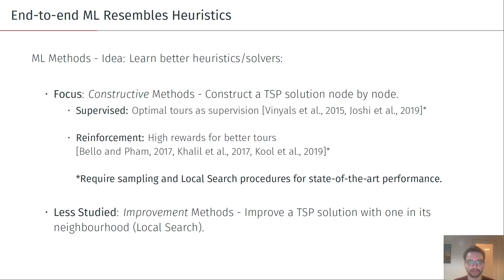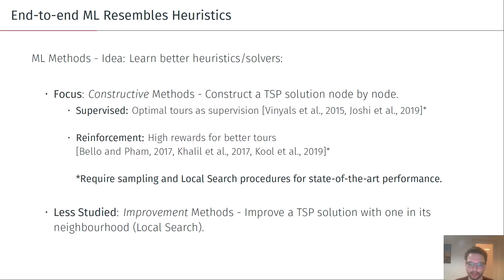However, both of these methods require sampling and a local search procedure to achieve state-of-the-art performance. What is not so well studied yet is an improvement method — those that try to improve a TSP solution within its neighborhood, much like a local search procedure.